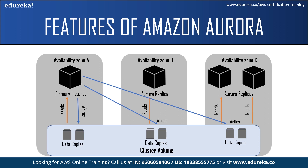There are two types of DB instances that make up an Aurora DB cluster. First, the primary DB instance, which supports read and write operations. Second, the Aurora replica, which connects to the same storage volume as the primary DB instance and supports only read operations. Each Aurora DB cluster can have up to 15 Aurora replicas in addition to the primary DB instance. Aurora replicas are located in separate availability zones, providing high availability — when a primary DB instance becomes unavailable, Aurora automatically fails over to an Aurora replica.